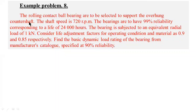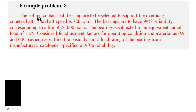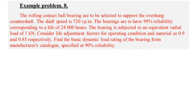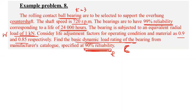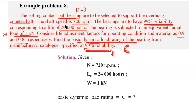For this problem, you have to design a rolling contact ball bearing. The given values are: speed N equals 720 RPM, life of bearing Lh equals 24,000 hours, and the dynamic equivalent load W equals 1 kilonewton.